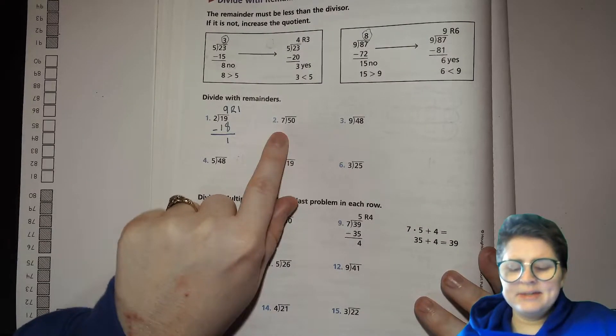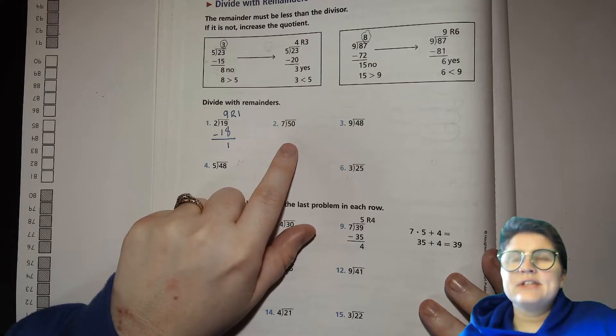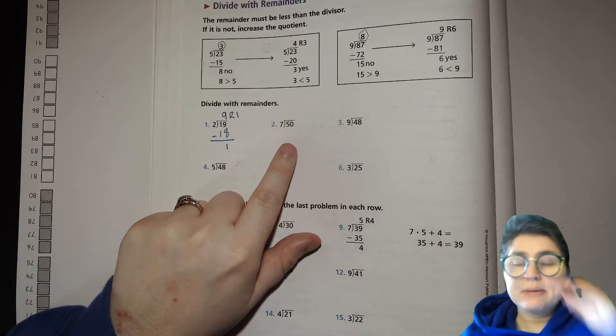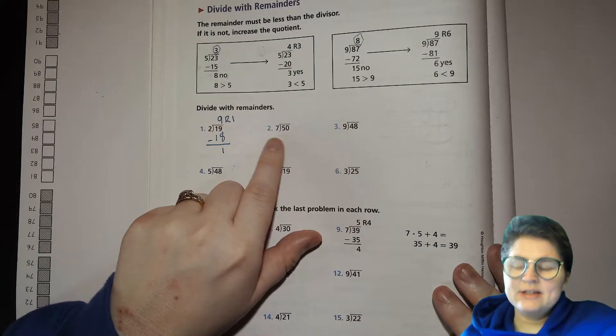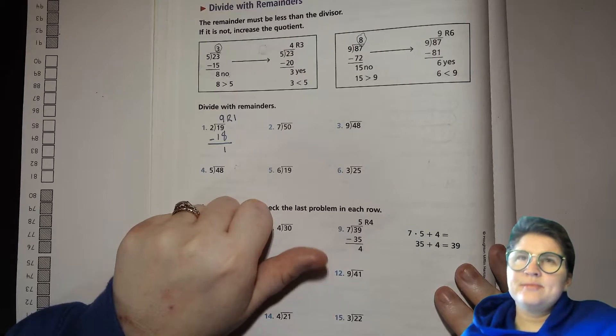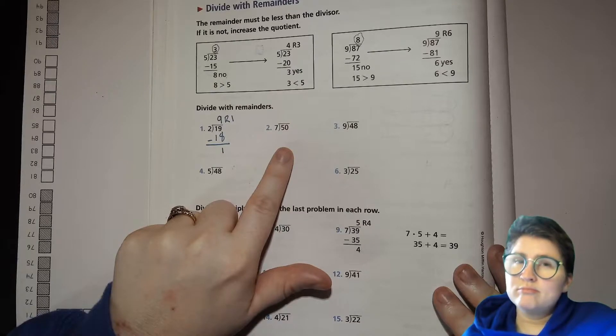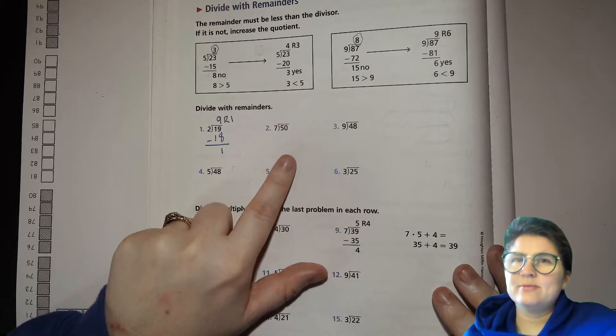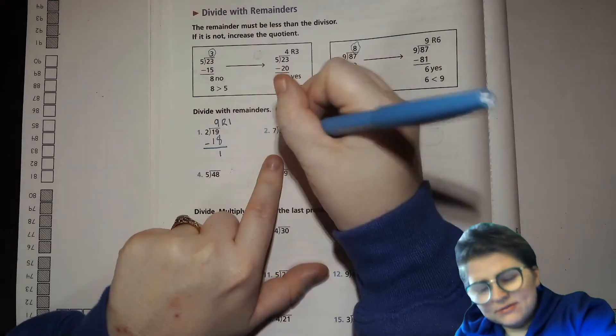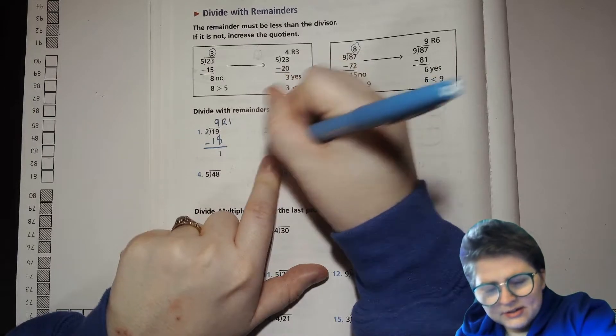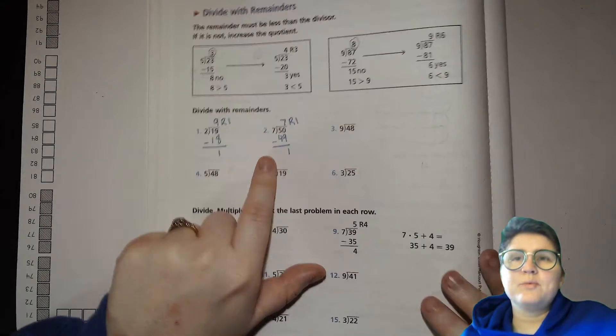7 into 50. How many 7s can you get in 50? Let's think. You have 7 times 5 is 35. It's got to be bigger than 5. 7 times 10 is 70. So, it's smaller than 10. 7 times 6 is 42. That's pretty close. What about the next one? 7 times 7. What's that? 49. That's really close. And the difference will just be 1, right? So, it's perfect. So, that was 7 times 7 with a remainder of 1, with 1 left over.